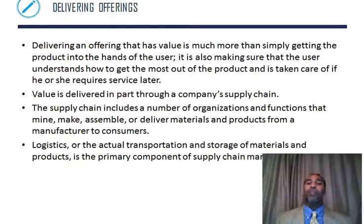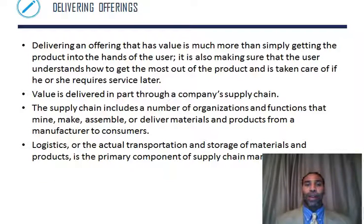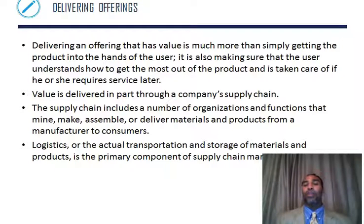Delivering offerings — delivering an offering that has value is much more than simply getting the product in the hands of users. You have to show them how to use it to the best of its ability, and make sure they understand how to get the most out of it and that it's taken care of if they require service later. Value is delivered in part through the company's supply chain, which includes a number of organizations and functions that mine, make, assemble, or deliver material — from the manufacturer to the consumer, the end user. You have B2C, which is business to consumer, or B2B, where you sell to a business that might resell it or use it as a component — like selling laptops that get bundled with a projector and sold as a package. Logistics, or the actual transportation and storage of materials and products, is a primary component of supply chain management.